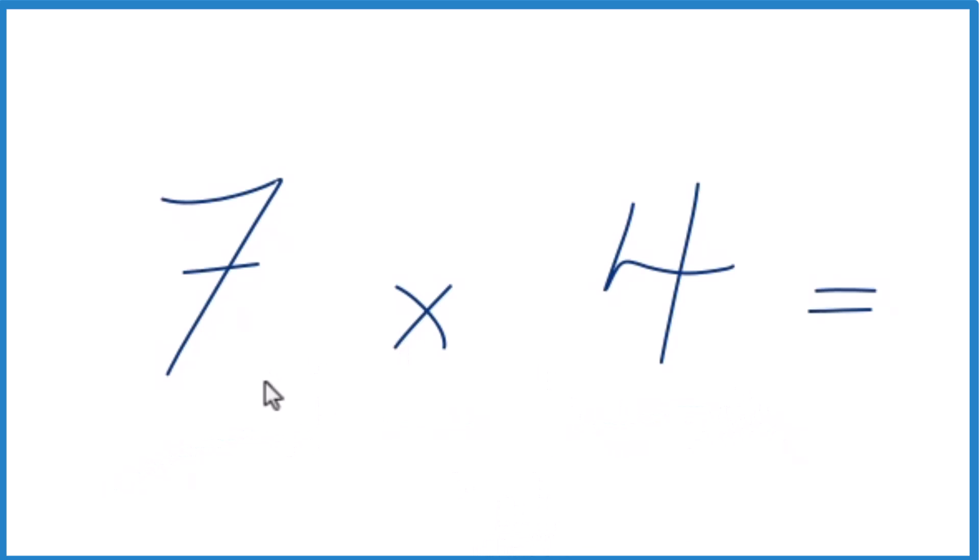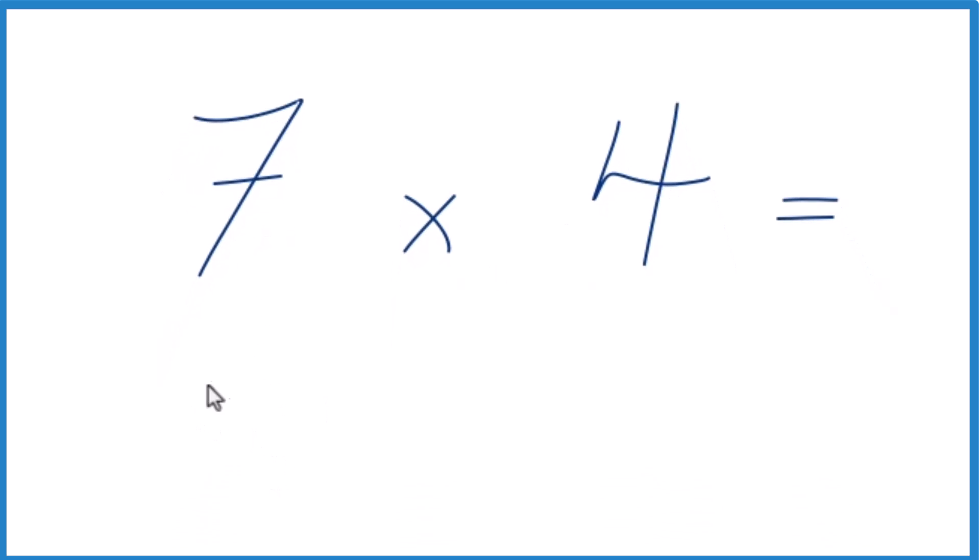First off, you could just write 7 four times. So 7 plus 7 plus 7 plus 7, and that would give you 7 times 4.